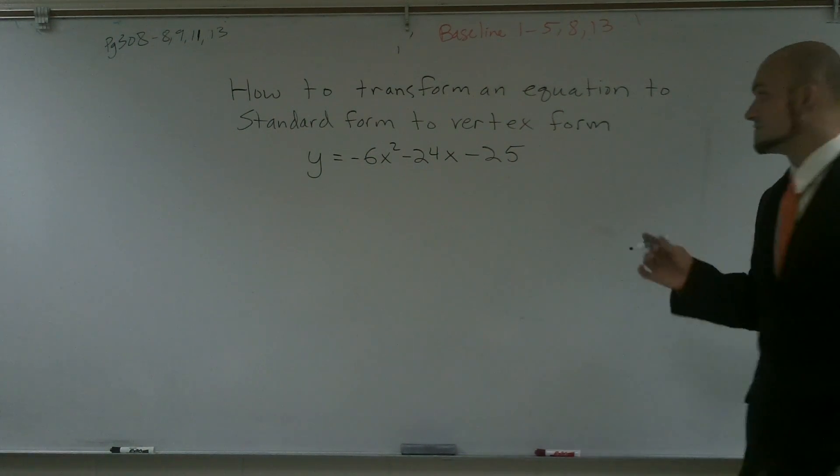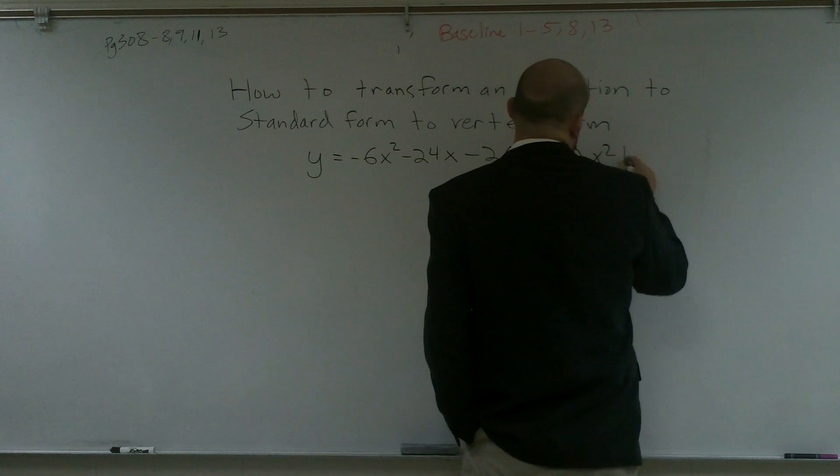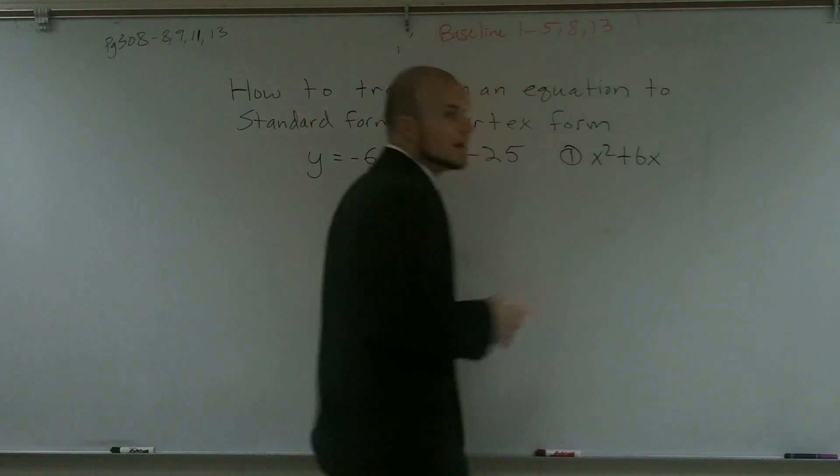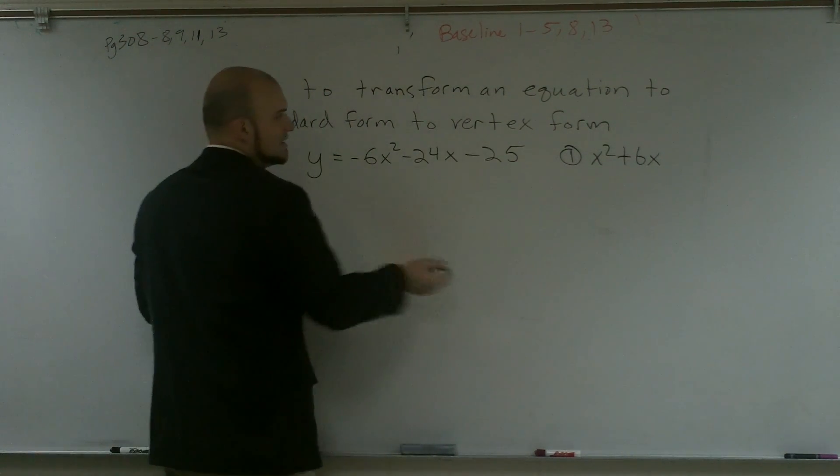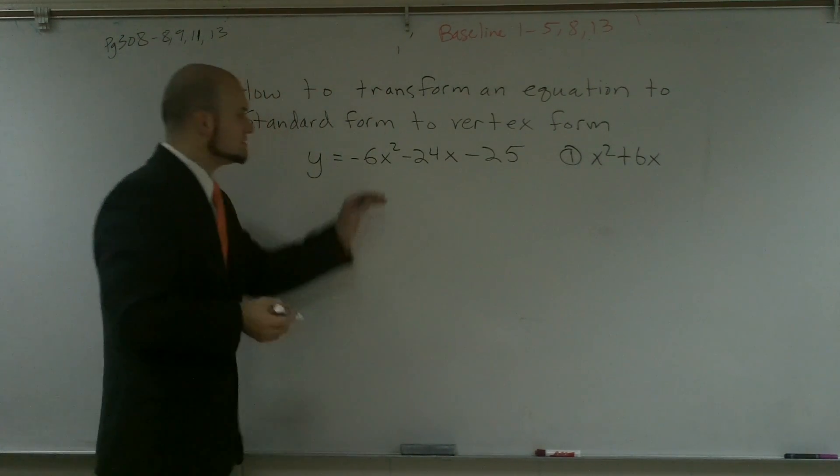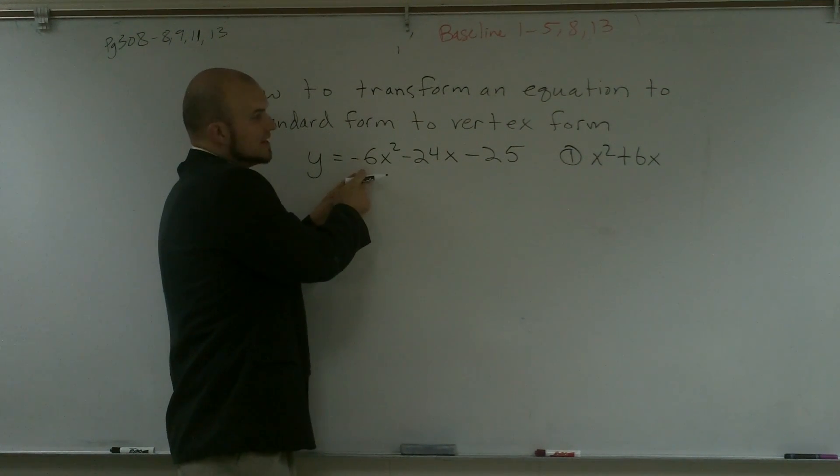The first step that we always have to look for is having our equation in x squared plus bx form. What that means is on my a, because remember originally we had a, b, and c, I have to have a 1 there. So I'm going to have to factor out this negative 6. I have to pull away this negative 6.